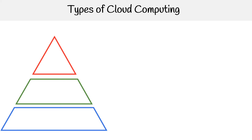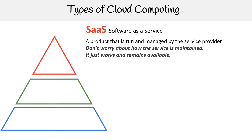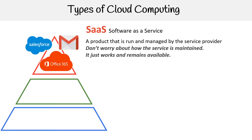Let's take a look at the types of cloud computing, starting at the top of our pyramid — and I promise you this is not a pyramid scheme. It is just a great way of doing this visualization. At the top we have Software as a Service, also known as SaaS. This is a product that is run and managed by a service provider; you don't worry about how the service is maintained — it just works and remains available. Examples of SaaS would be Salesforce, Gmail, and Office 365. This is the most common type of cloud computing.